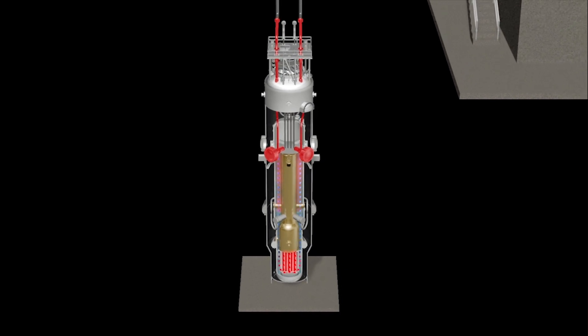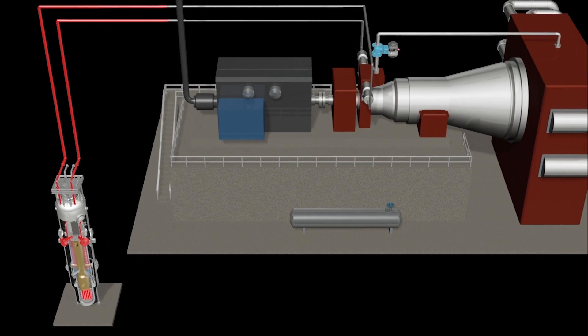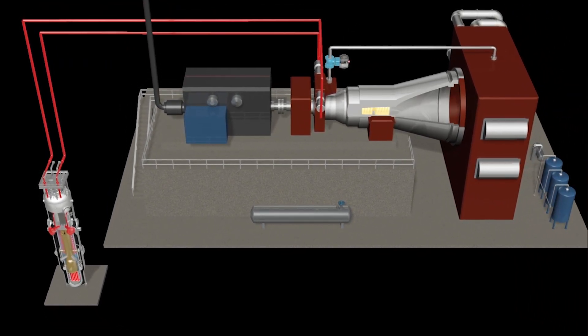Heated water inside the steam generator tubes turns to steam. Steam exits the steam generators, and the pressure carries it to the turbine, where the pressure from the steam turns the blades.